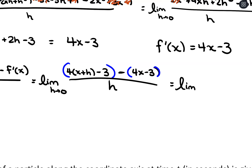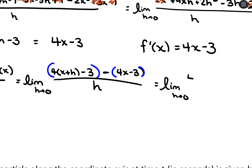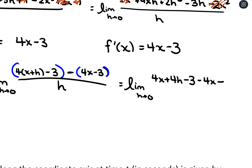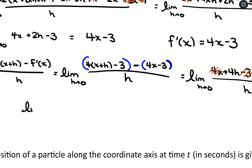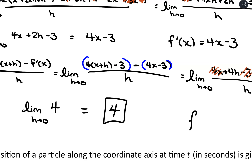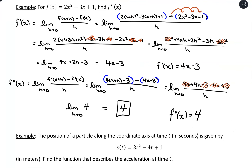So we'll have the limit as h approaches 0 of 4x plus 4h minus 3, then distribute the negative for minus 4x plus 3, over h. 4x minus 4x is 0, negative 3 plus 3 is 0, so we just have 4h divided by h. Evaluating the limit as h approaches 0 of just 4, our second derivative function is 4. So no matter where we are on that function, the second derivative equals positive 4.